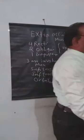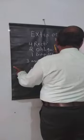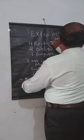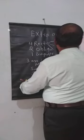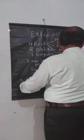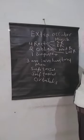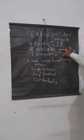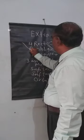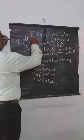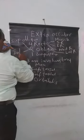The four recti muscles are: superior rectus, inferior rectus, medial rectus, and lateral rectus. Then comes the two obliques: superior oblique and inferior oblique.